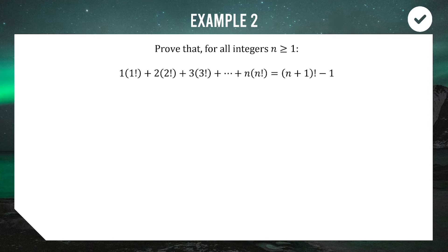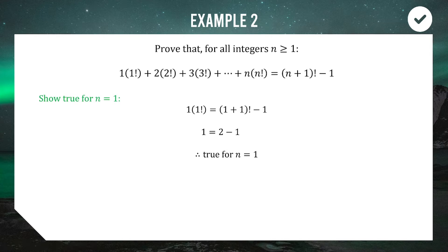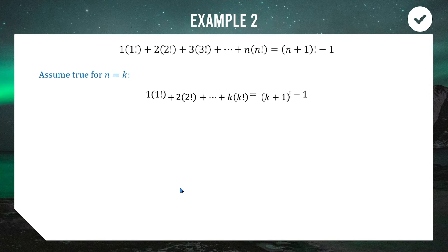The next kind of question the HSC loves to throw at you involves factorials. As long as you understand how to manipulate factorials, these questions are usually pretty straightforward. Our statement involves a factorial sum and we're proving it for n greater than or equal to one. Starting with n equals one: the left-hand side is 1 × 1!, the right-hand side is (1+1)! − 1 = 2! − 1 = 1. Both sides equal one, so the initial case holds.